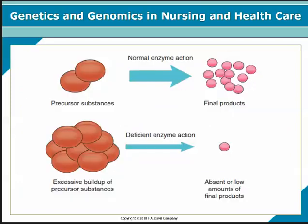Here's a graphic depiction of that — how you have normal enzyme activity and then you have your final product. But if you have deficient enzyme action, you can have an excessive buildup of those precursor substances and low or absent amounts of the final product, and that is how you get the disorder or the deficiency.